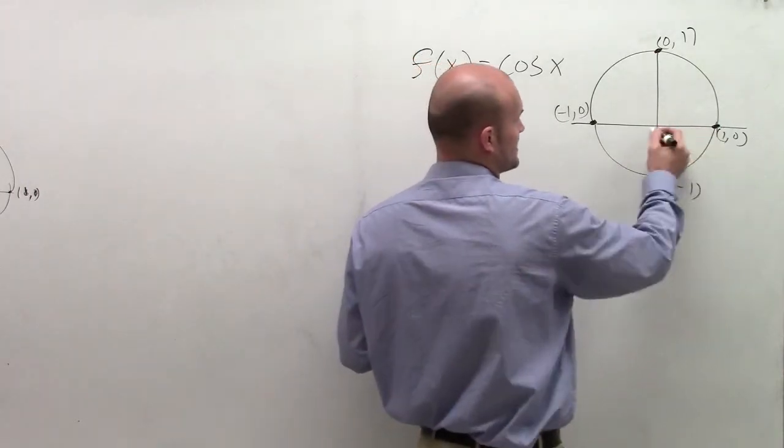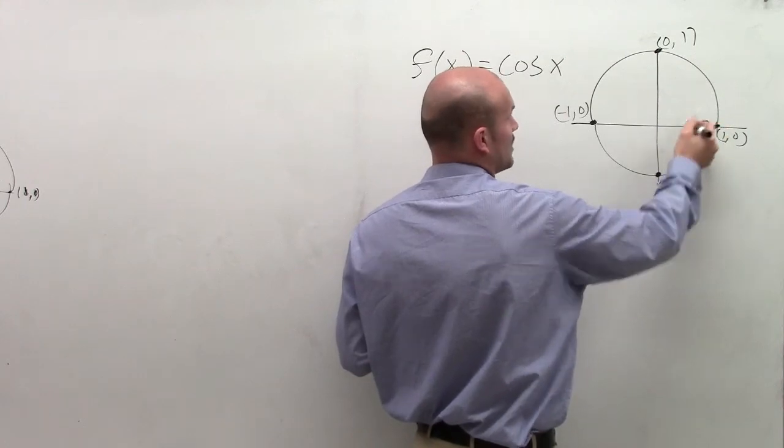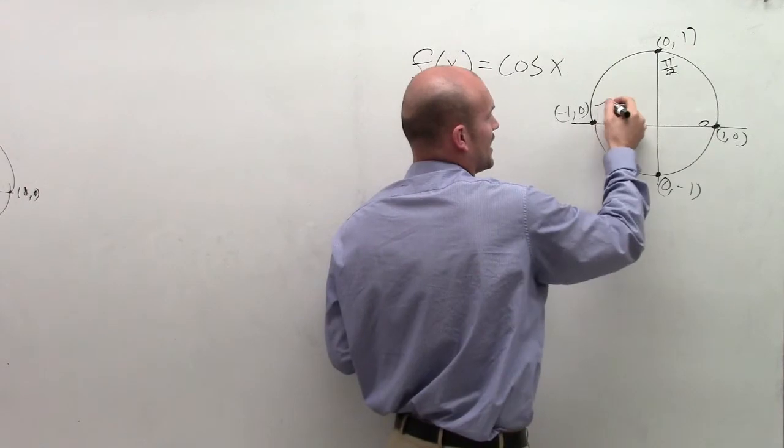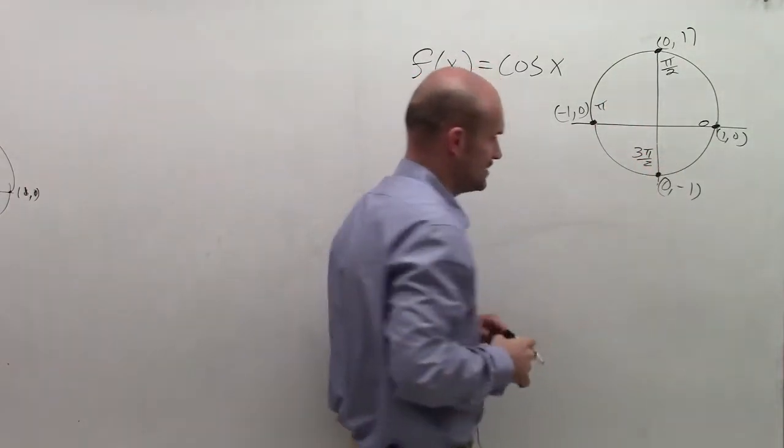So at this angle, for this certain point, my angle is 0, 0 radians. Here, I have π/2 radians. For this angle, I have π radians. And over here, I have 3π/2 radians.